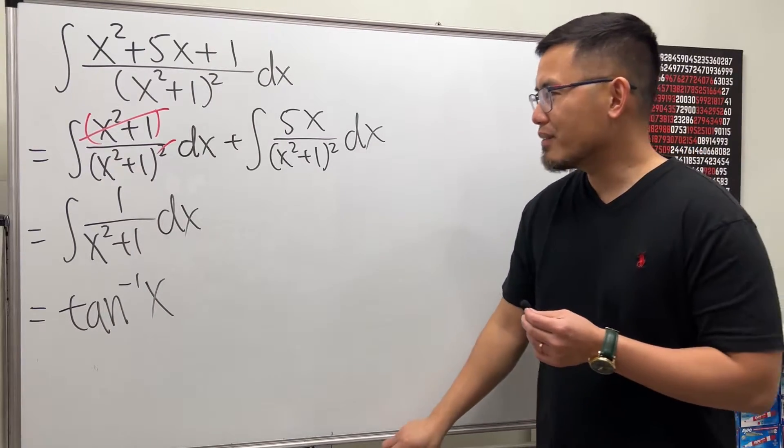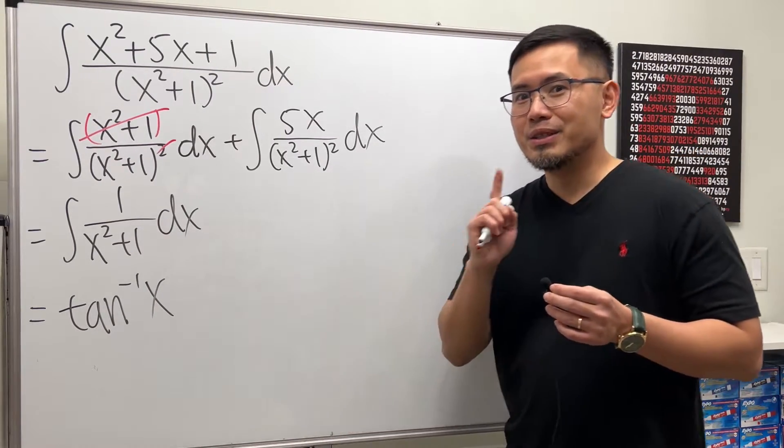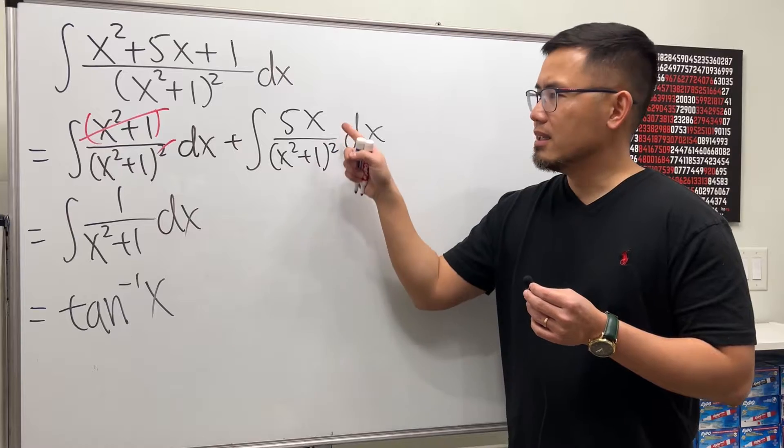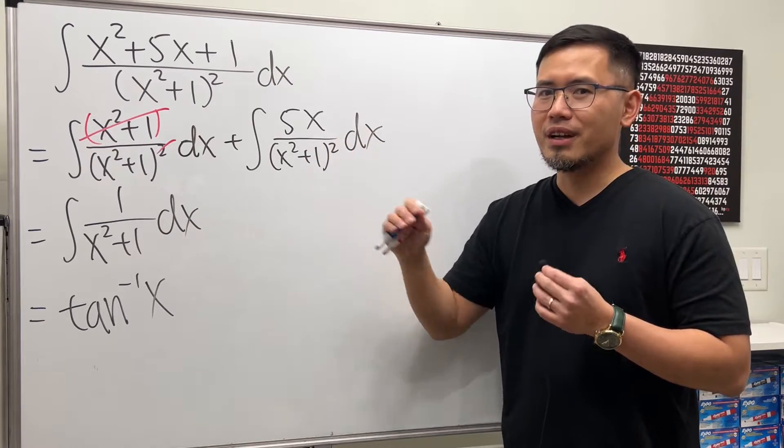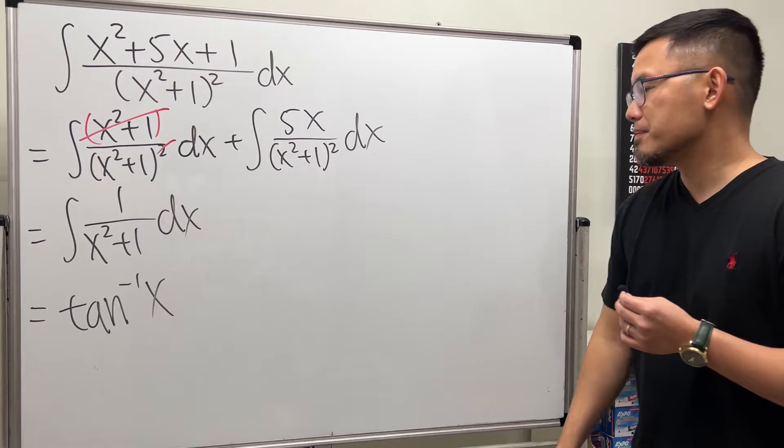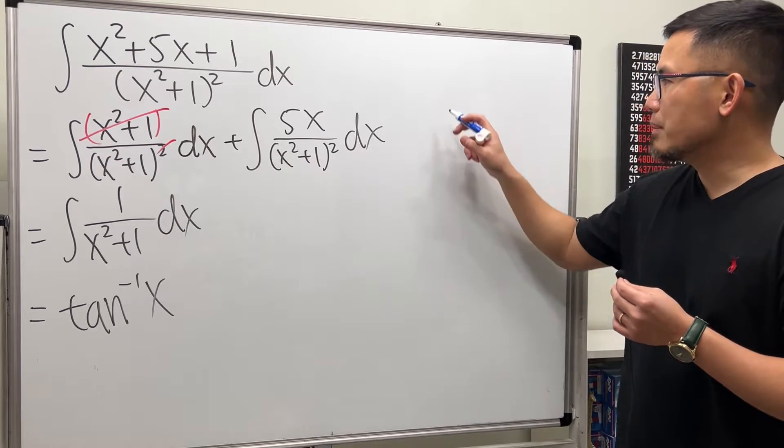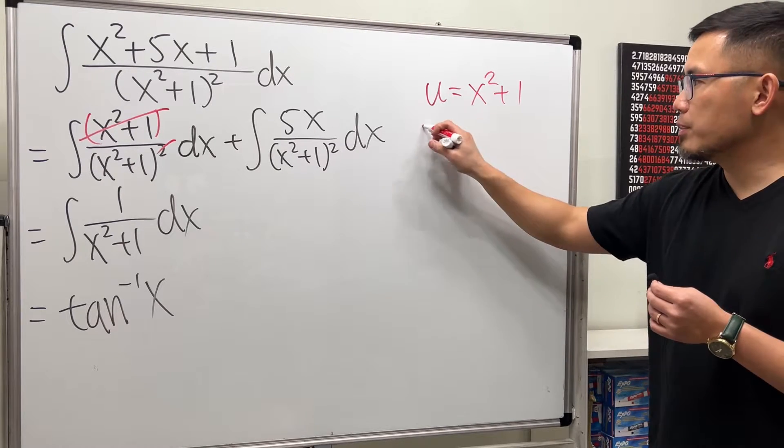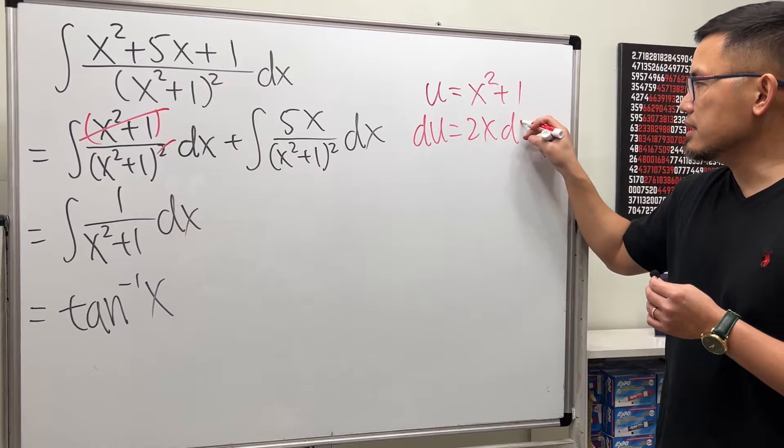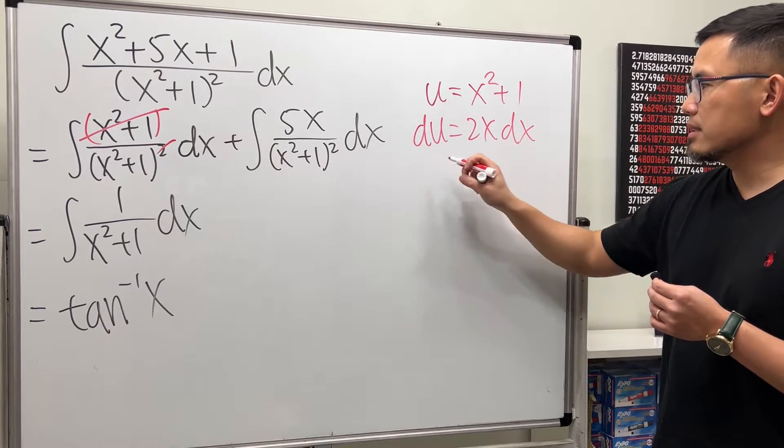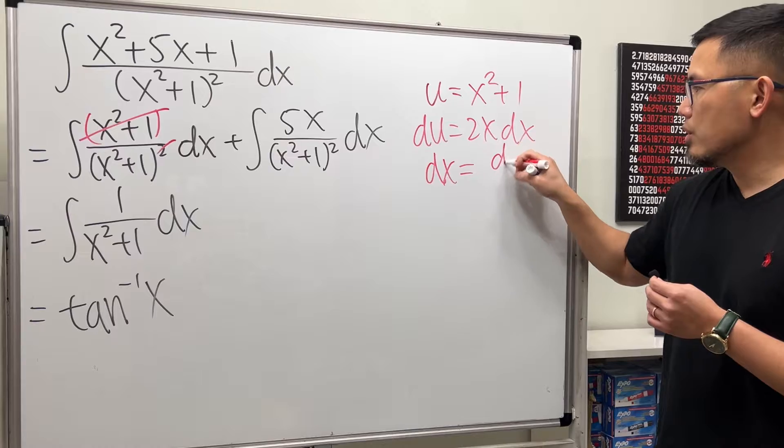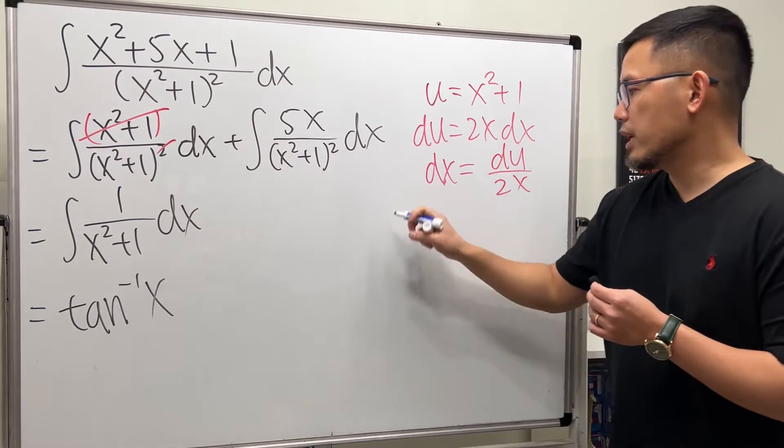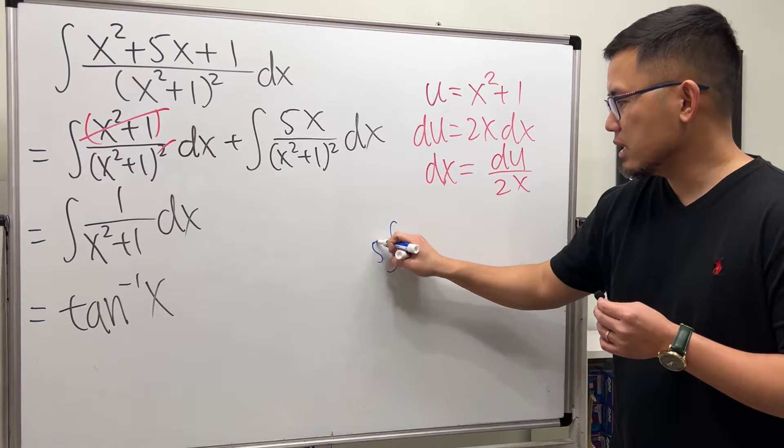For this though, do we have to use partial fraction? No, because the derivative of the inner function here is 2x, and we happen to have an x right here. So we can cancel it out. Let me show you. For this right here, I'll just do a u sub. Let u equal to the inside, which is x squared plus one. And differentiate both sides. du equals 2x dx. Isolate the dx, so dx equals du over 2x.